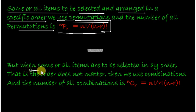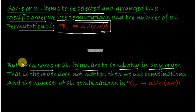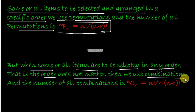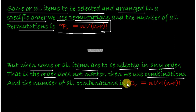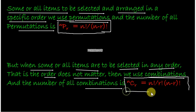But when some or all items have to be selected in any order — that is, the order does not matter — then we use combinations. The number of all combinations is given as NCR, which is equal to N factorial upon R factorial into N minus R factorial.